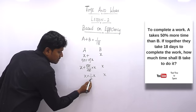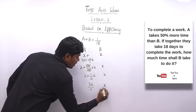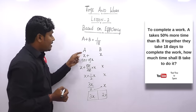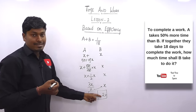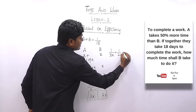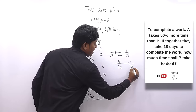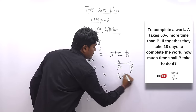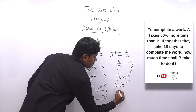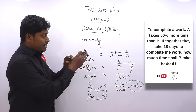Substituting: 1/3x + 1/2x = 1/18. Taking LCM as 6x: (2 + 3)/6x = 5/6x = 1/18. Cross-multiplying: 5 × 18 = 6x, so 90 = 6x, giving x = 15. B takes 2x days = 2 × 15 = 30 days. So B alone takes 30 days to complete the work.